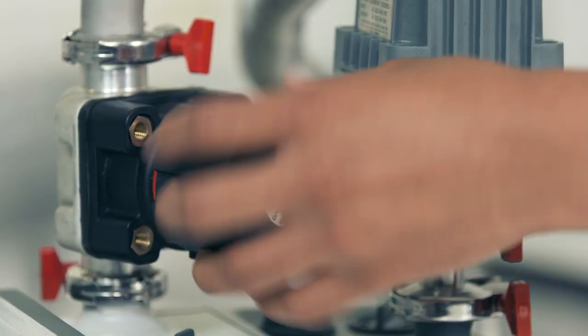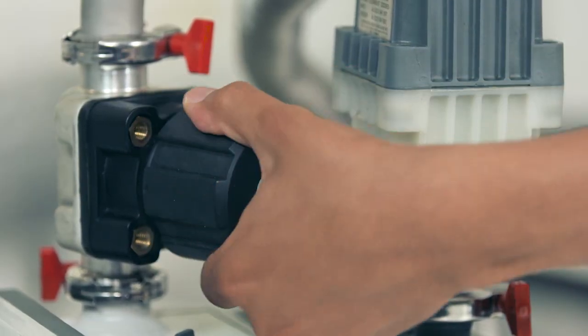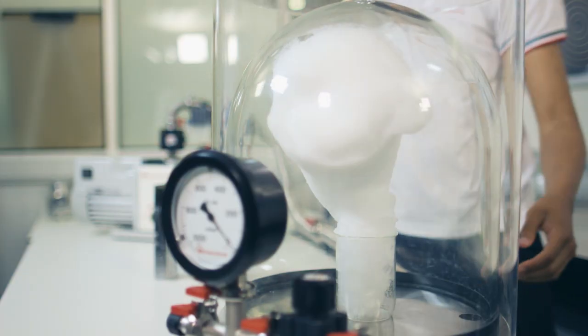So I close this valve to prevent the vacuum pump from pulling any more air out of the chamber and next I'll open the valve allowing atmospheric air in.